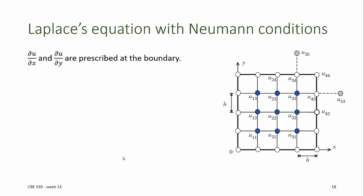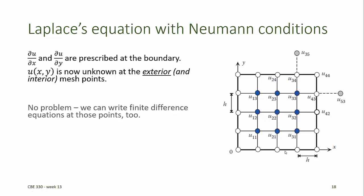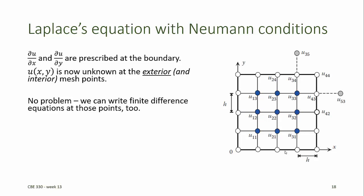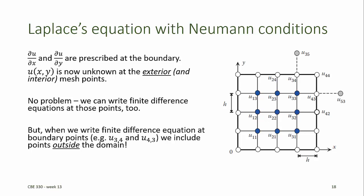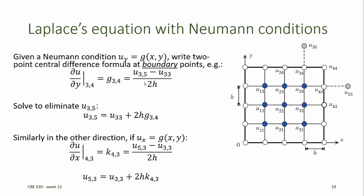Now what happens if we want to solve Laplace's equation with Neumann boundary conditions instead of Dirichlet boundary conditions? For the Neumann condition, we don't know the values of our dependent variable on the boundaries of the domain, so those now become unknown points — we only know the derivatives at those boundary points. Now u is unknown at both the exterior and the interior mesh points. That's not a problem because we can write finite difference equations at those exterior mesh points too. If we use central difference formulas, then the finite difference equations for the boundary points will include points outside of the domain. So we must eliminate these points that appear outside of the domain. At each point on the boundary, the Neumann condition can be used to eliminate the unknown exterior point.